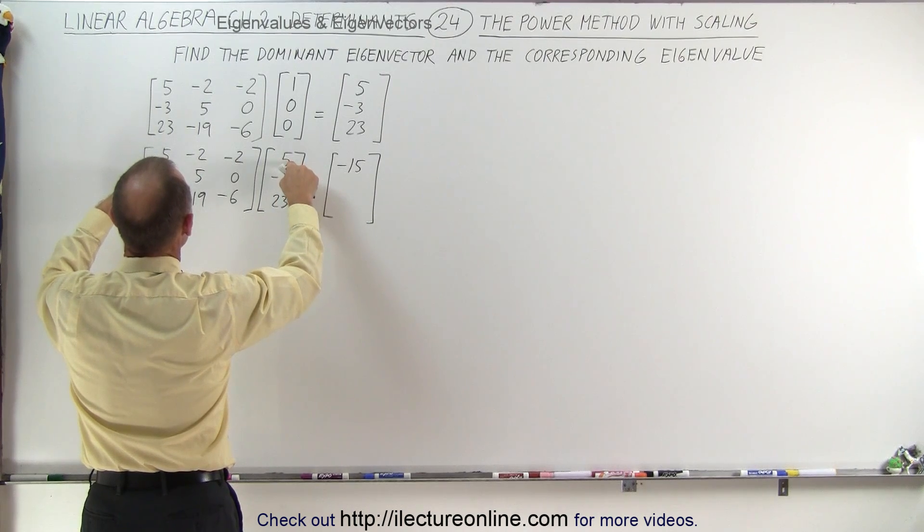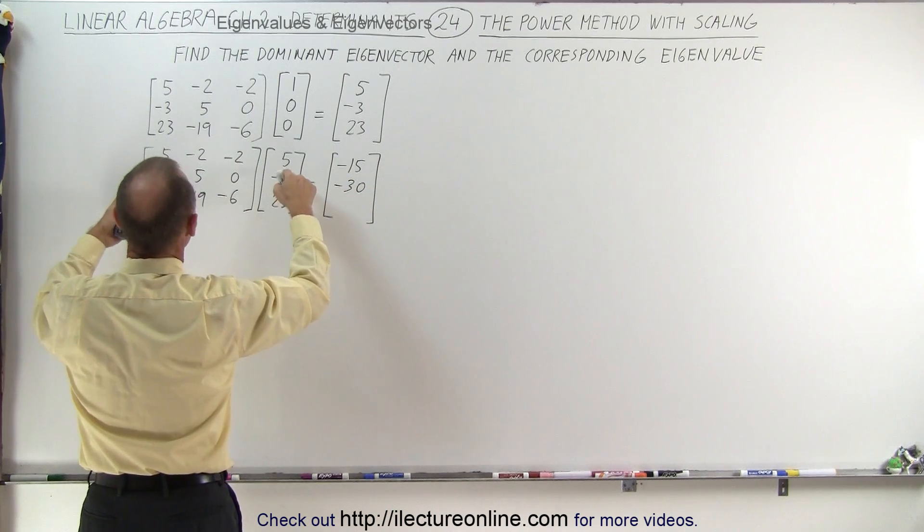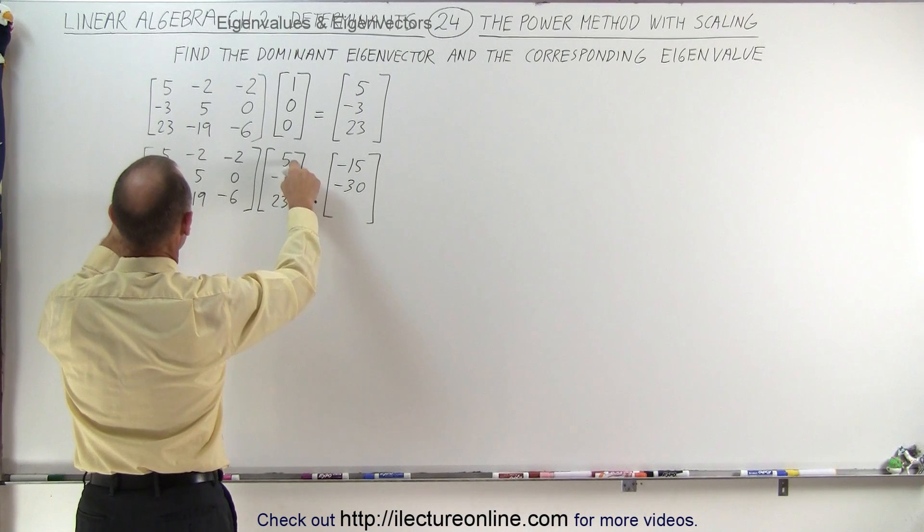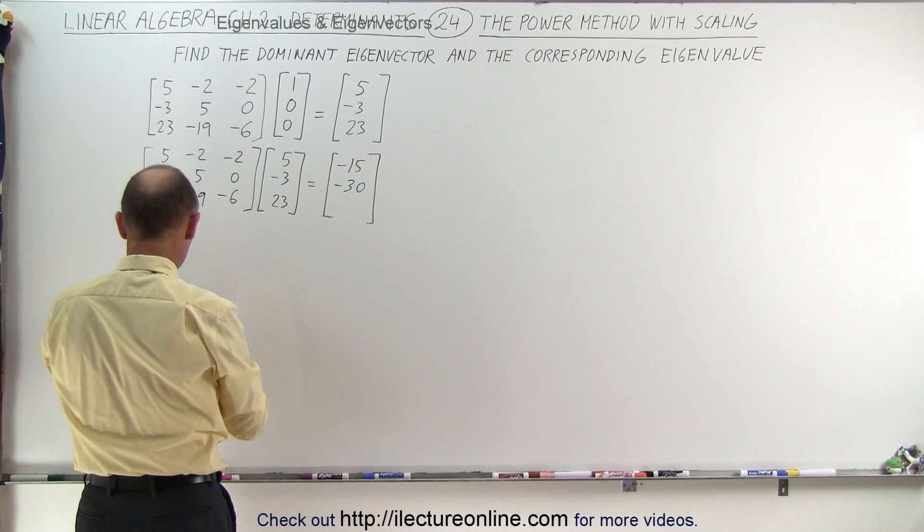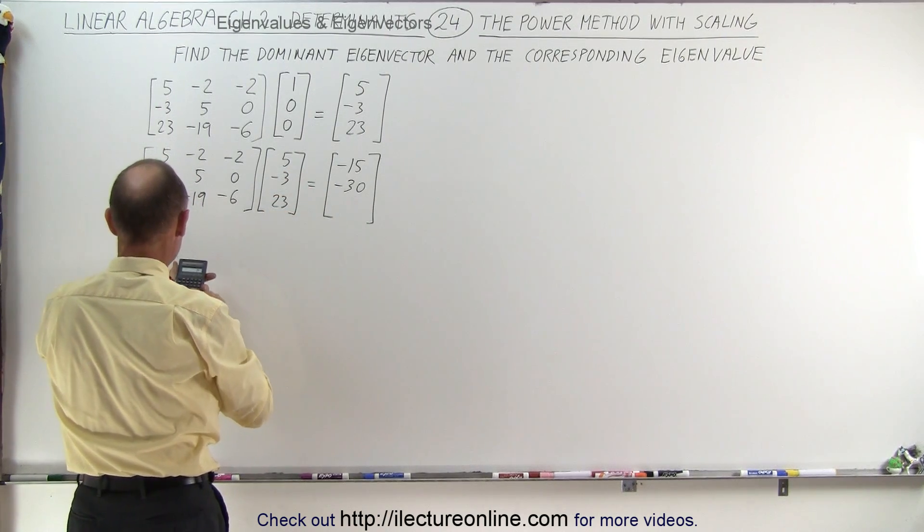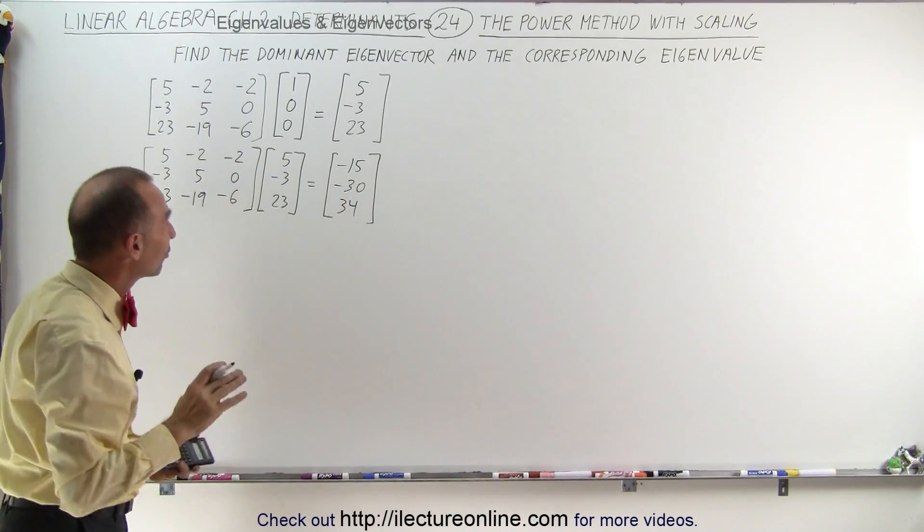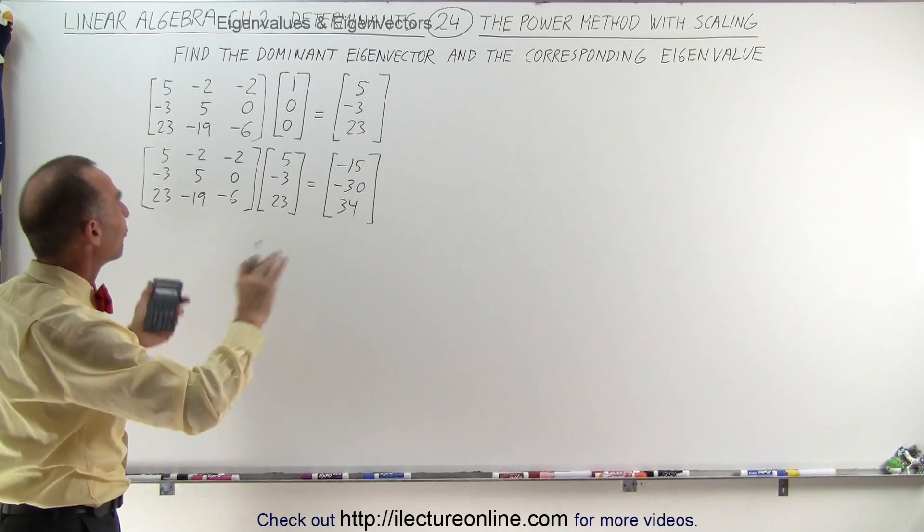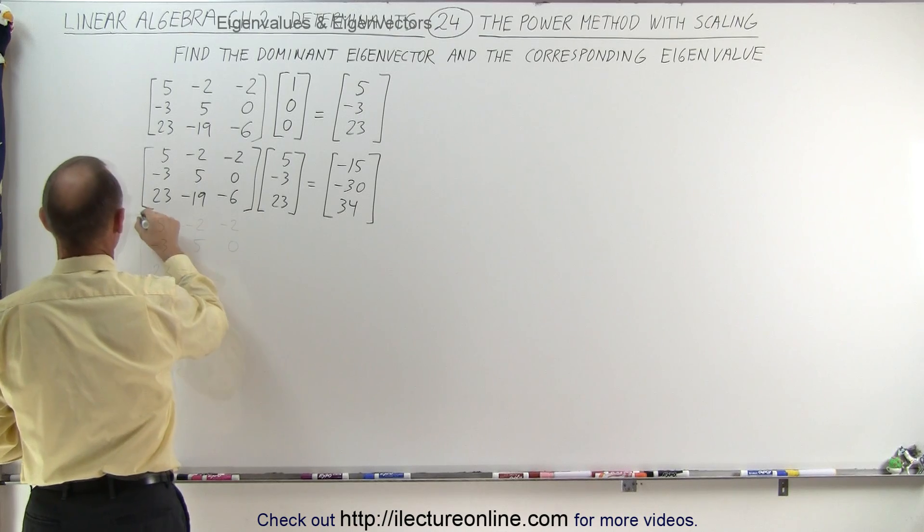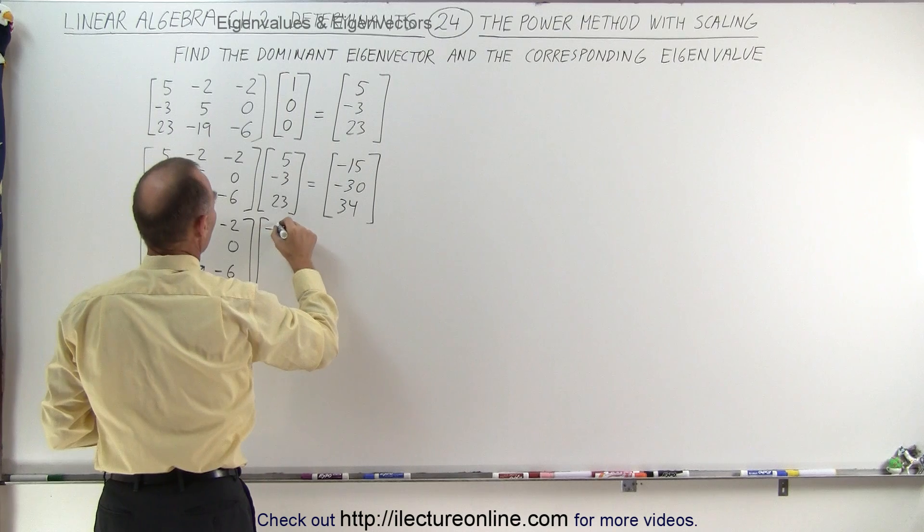Next, minus 15 minus 15 is minus 30. And here we get 23 times 5 plus 3 times 19 and minus 6 times 23. I get 34. Again, I don't think I need to use scaling here because it doesn't look like it's converging anywhere near what I'm looking for. So let's continue before we start scaling.